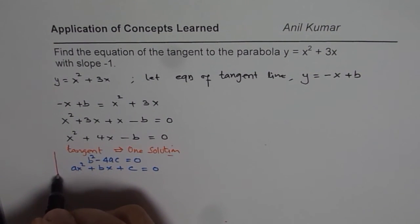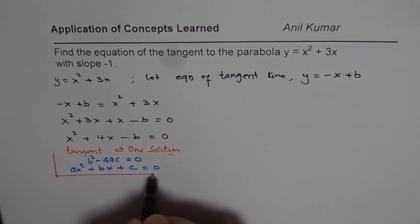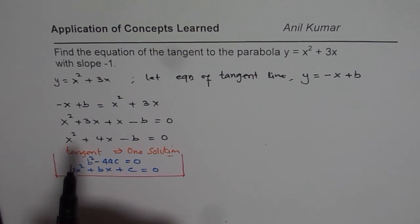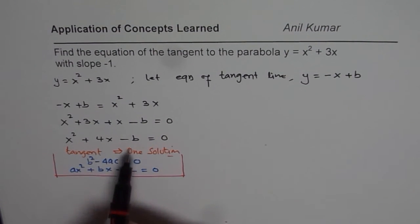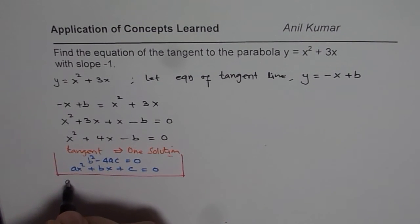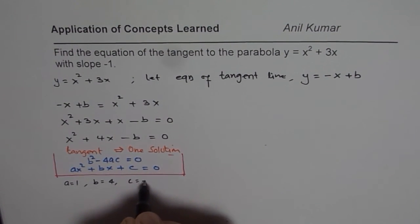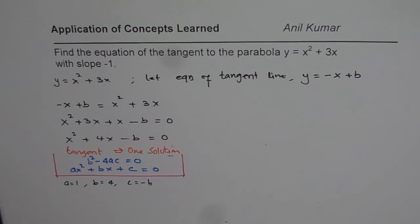So, this is what we are going to apply, right? So, in our equation, what is a, what is b and what is c? In our equation, we have a as equals to 1, b as equals to 4 and c as equals to minus b. Do you get the idea, right?